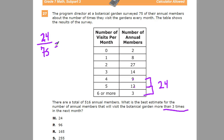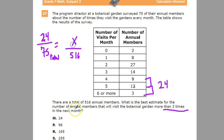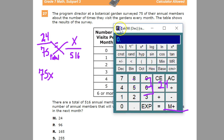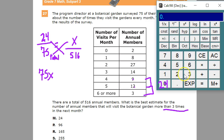Now to convert this into a number we can use to evaluate the total population, we want to use the 516 annual members — that's our total. Setting up the proportion, 516 goes on the bottom and x is the unknown number of members who visit more than three times. So I just need to cross multiply: 75 times x equals 75x. Now I'm ready to use the calculator — 516 times 24.